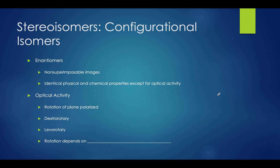The last topic we're going to cover is configurational isomers. Configurational isomers are isomers that have a relative position set in their atoms and cannot be changed with the rotation of bonds — cleaving and reforming bonds is the only way to change the molecule. There are two types: enantiomers and diastereomers. Enantiomers are isomers that are non-superimposable mirror images — essentially chiral molecules. Enantiomers have identical physical and chemical properties except for optical activity, which is the rotation of plane polarized light by the chiral molecule. Assuming equal concentration and path lengths, one enantiomer will rotate the same magnitude as the other but in the opposite direction.